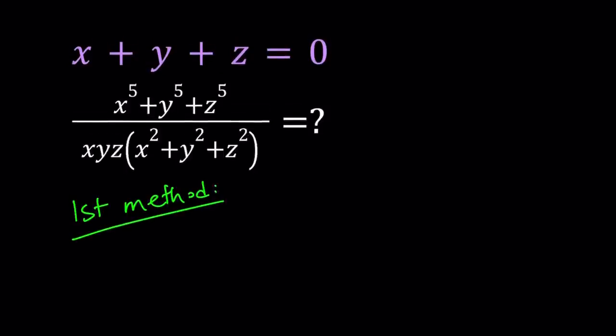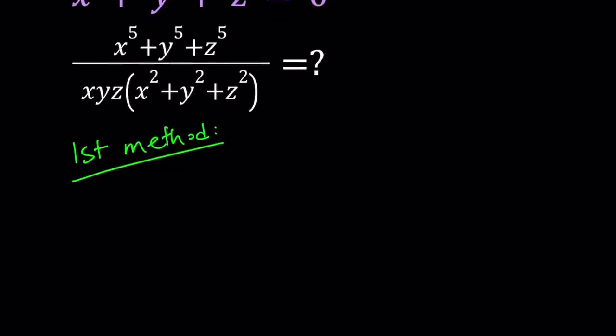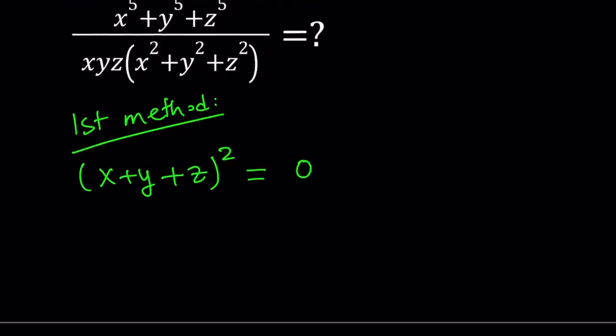We are given that x plus y plus z is equal to 0, and we have the sum of fifth powers, the sum of squares, and the product. We don't really have something nice for the product, but the product is going to come up later. So let's go ahead and start by squaring x plus y plus z, because that's going to give us something about the sum of squares. Since x plus y plus z equals 0, its square equals 0.